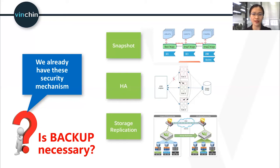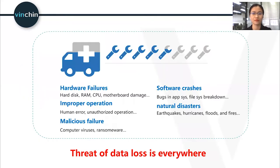Snapshot relies heavily on production data and will cause poor performance of the production server. HA and storage replication can only prevent data loss from hardware failure. But actually, the threat of data loss is everywhere and more than just this. Software crashes, human error, virus, ransomware, even a natural disaster can get your critical data lost.